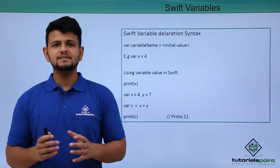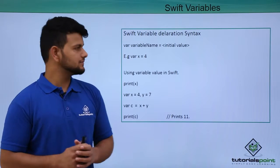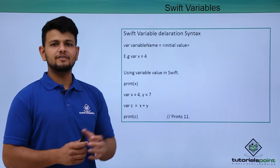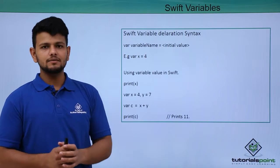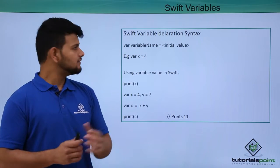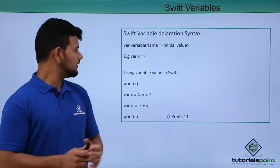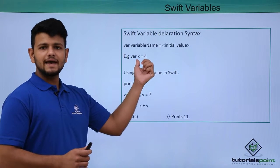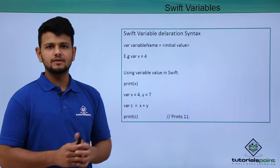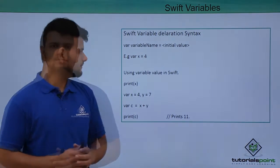Now we will see the basic syntax of variable declaration in Swift language. First, we will use the var keyword to declare a variable, then we will give a name to the variable, and then we will give the initial value. For example, var x = 4. Here, var is a keyword, x is the variable name, and 4 is the value assigned to this variable.